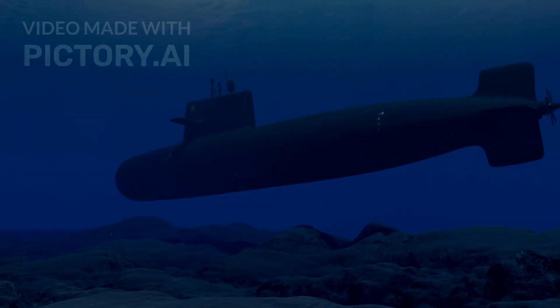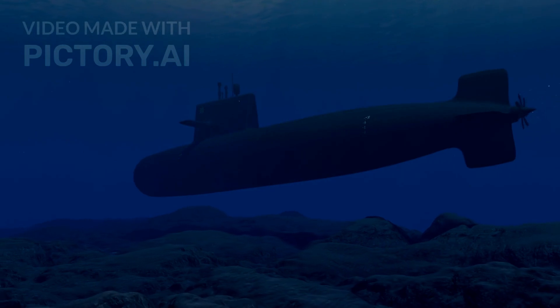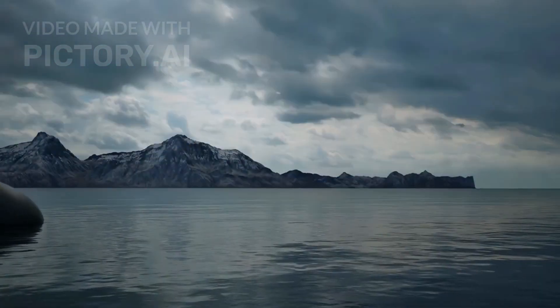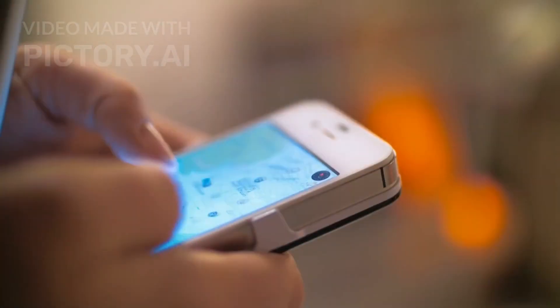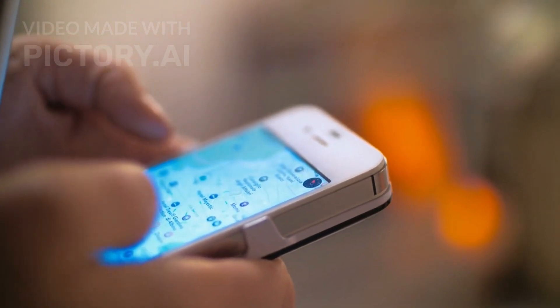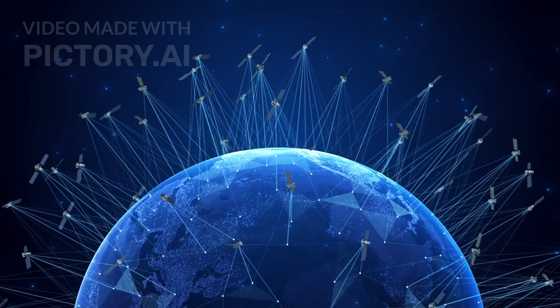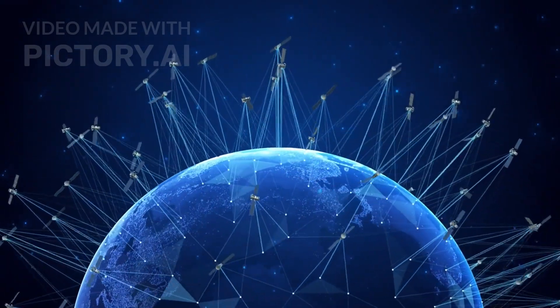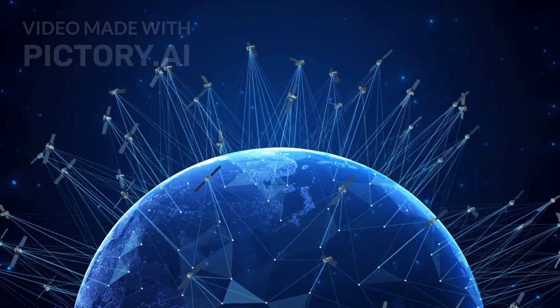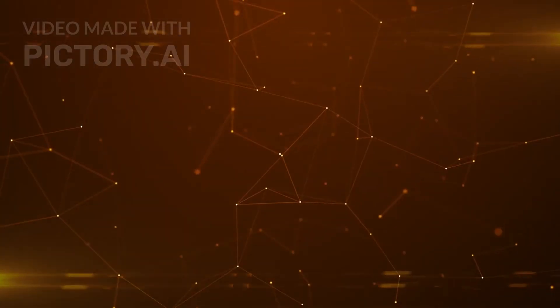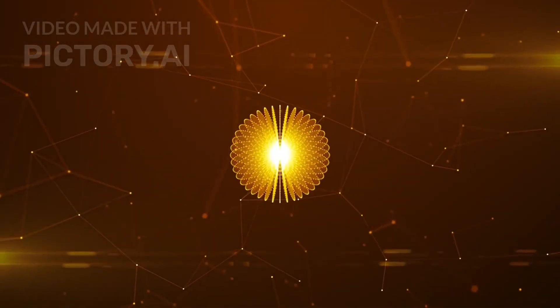Now imagine embedding that sensor inside a submarine. No need to surface. No need for GPS. A quantum navigation system could tell the vessel exactly where it is, anywhere on Earth, with no external signals. It would be unjammable, untrackable, and always aware.